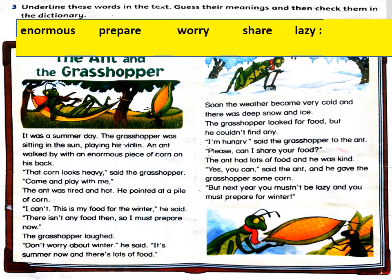In part three, we can find and underline these words in the text. Let's begin. The word 'enormous' appears in the sentence: 'An ant walked by with the enormous piece of corn on his back.' Underline enormous. Next, 'so I must prepare now' — underline prepare. 'Don't worry about winter' — underline worry. 'Please, can I share your food?' — underline share. And the last word, 'lazy,' in: 'But next year you mustn't be lazy' — underline lazy.